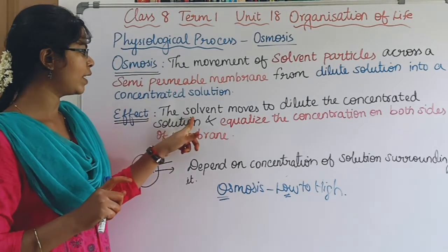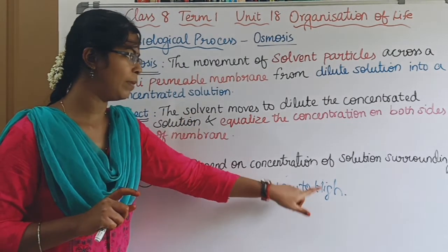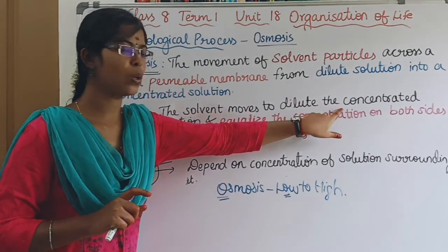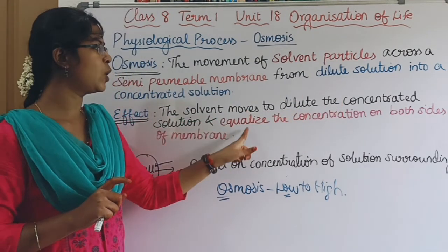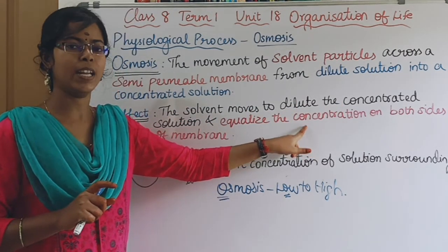Why do the solvent particles move from low to high concentration? When they move, the high concentrated solution becomes diluted, and this equalizes the concentration on both sides of the membrane.